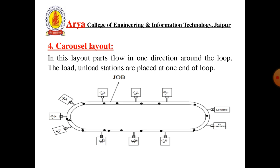Fourth is Carousel Layout. In this layout, parts flow in one direction around the loop. The load-unload stations are placed at one end of the loop, as shown in the figure.